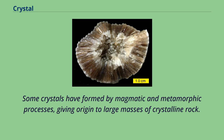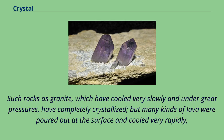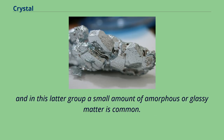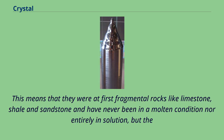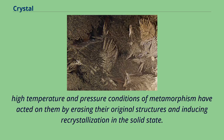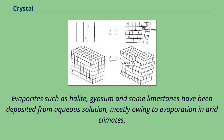The vast majority of igneous rocks are formed from molten magma, and the degree of crystallization depends primarily on the conditions under which they solidified. Rocks such as granite, which have cooled very slowly and under great pressures, have completely crystallized, but many kinds of lava were poured out at the surface and cooled very rapidly, and in this latter group a small amount of amorphous or glassy matter is common. Metamorphic rocks such as marbles, mica schists, and quartzites are recrystallized — originally fragmental rocks that were never molten, but subjected to high temperature and pressure, erasing their original structures and inducing recrystallization in the solid state. Other rock crystals have formed by precipitation from fluids, commonly water, to form druses or quartz veins. Evaporites such as halite, gypsum, and some limestones have been deposited from aqueous solution, mostly owing to evaporation in arid climates.